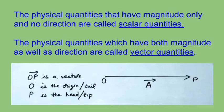Vectors do not follow the simple rules of algebra as scalars since they have direction also. Vectors can be added, subtracted, and multiplied only following the rules of vector algebra. In vector algebra, division of a vector by another vector is not valid.